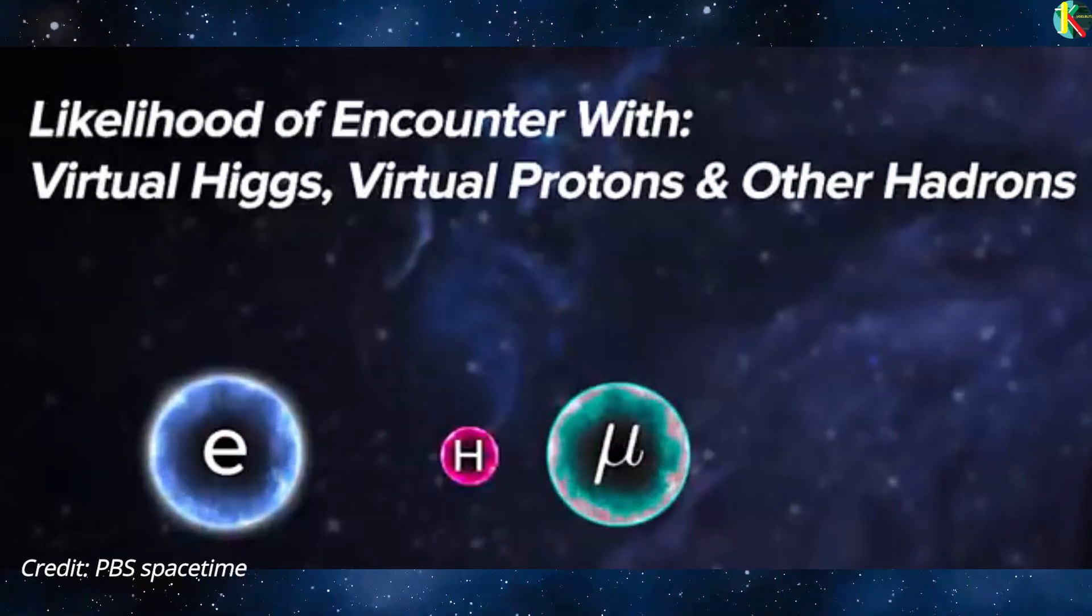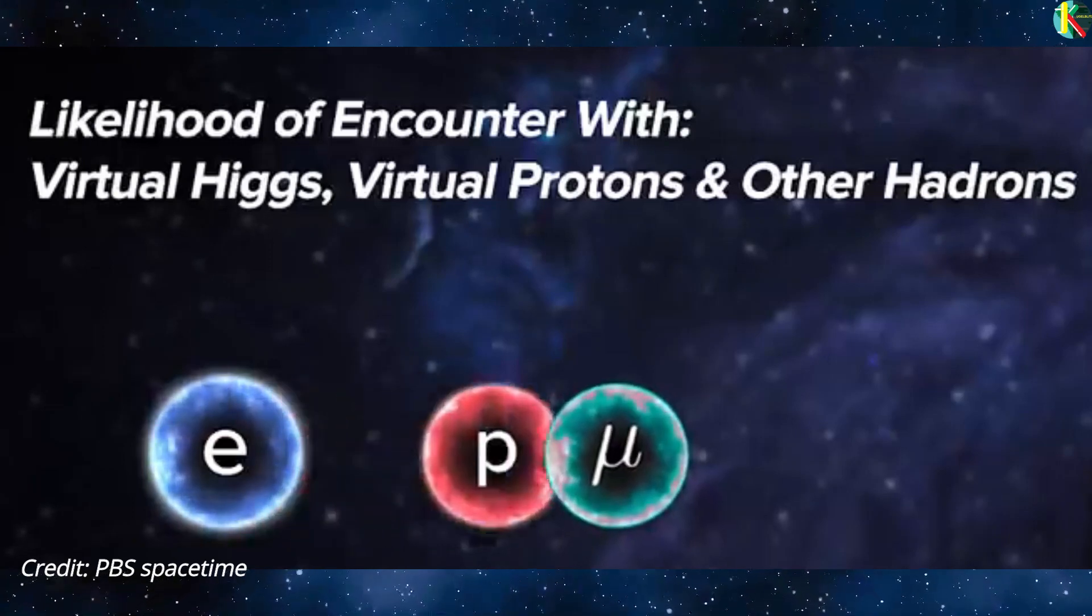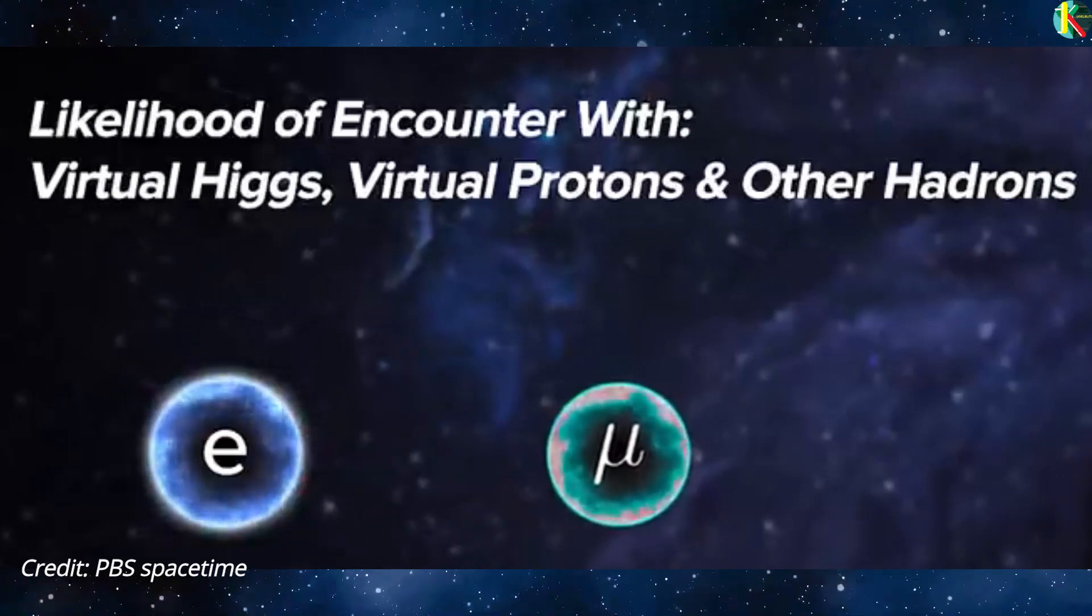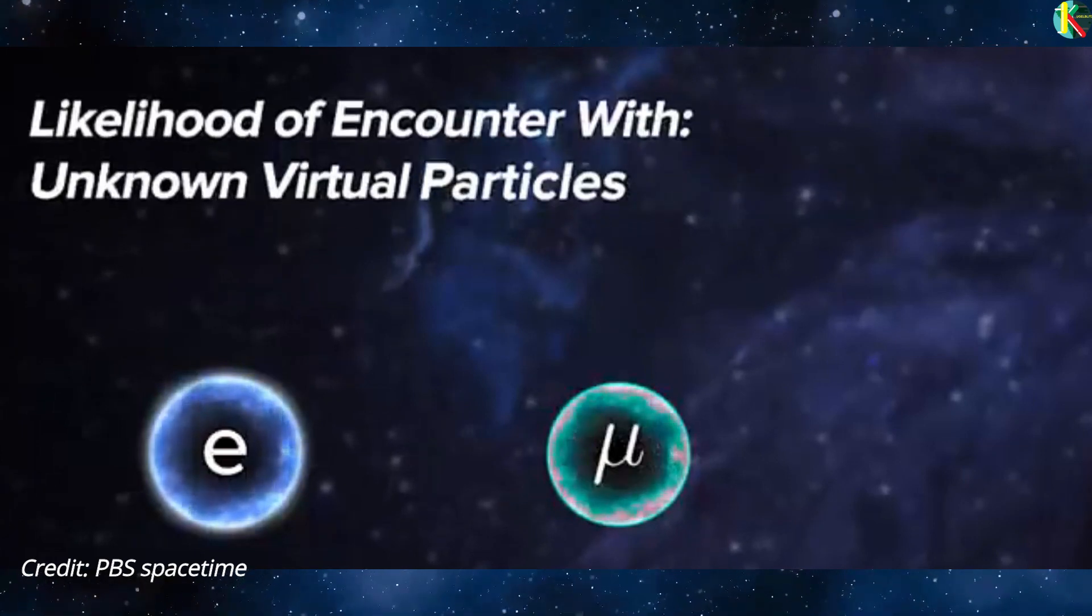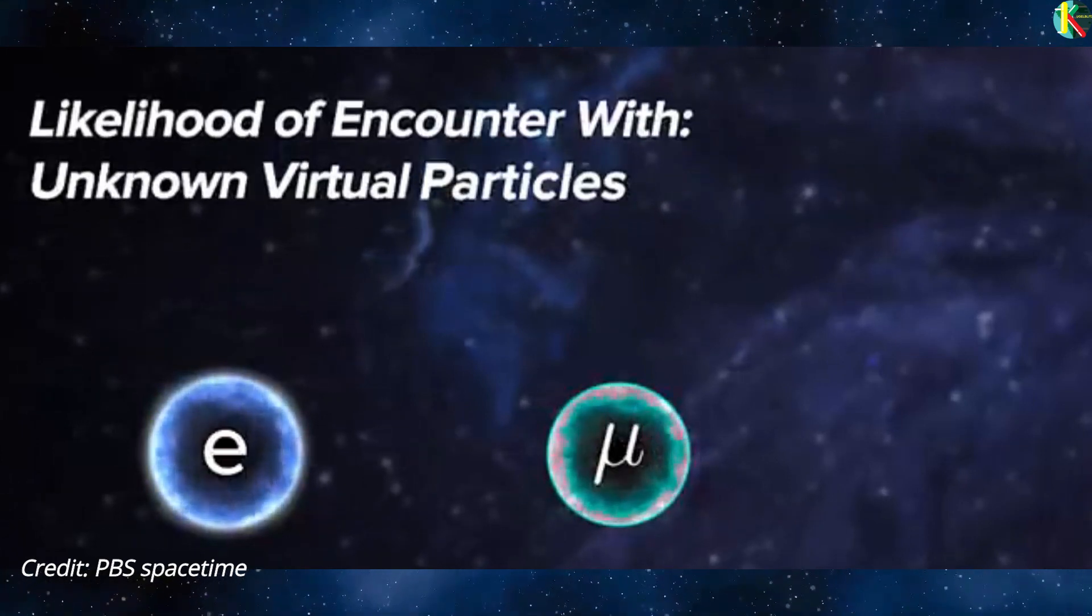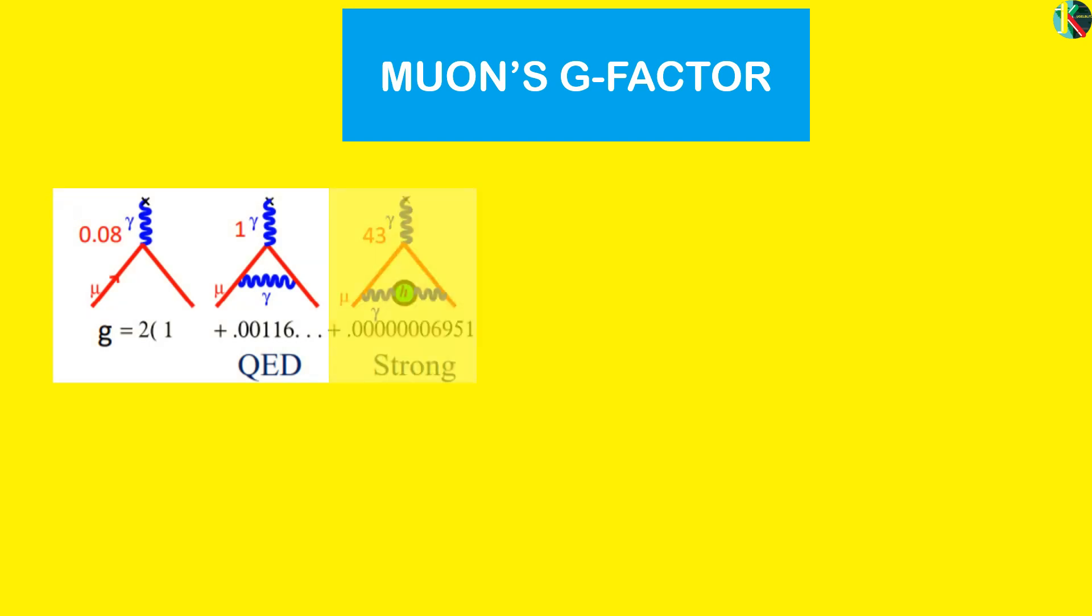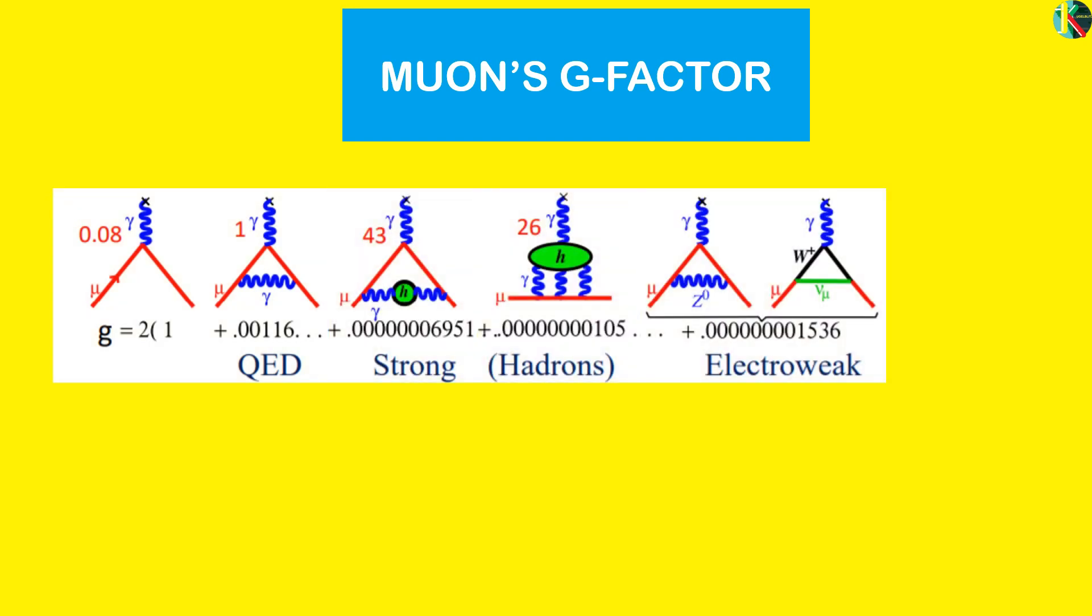In this way it's 40,000 times more likely than the electron to encounter say a virtual Higgs boson or a virtual proton or other hadron and it's 40,000 times more likely to encounter any completely unknown virtual particles as well. But even if we account for all the known particles we still get a g-factor that is off.